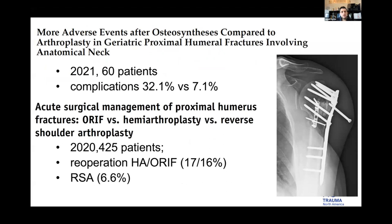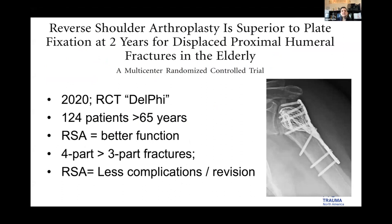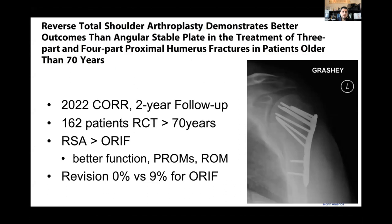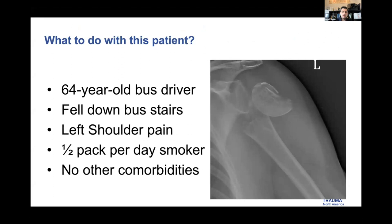Other studies comparing ORIF versus reverse shoulder arthroplasty or versus hemi-arthroplasty in three-way studies — all in geriatric patients — consistently find much higher reoperation rates and complications for hemi-arthroplasty or ORIF. A well-done RCT looking at two-year outcomes found RSA provided better function, more so in four-part versus three-part fractures, with fewer complications even given the supposed high risk of complications. A newer study confirmed the same: better function with RSA, decreased revision rate and reoperation.